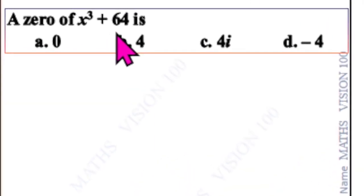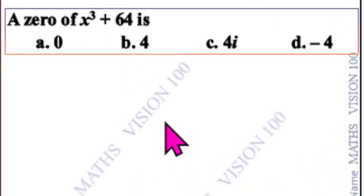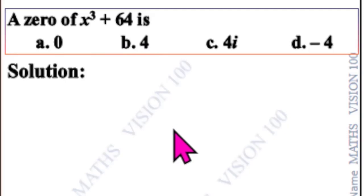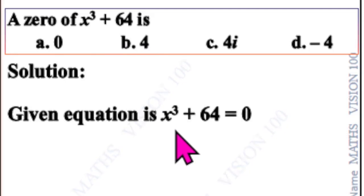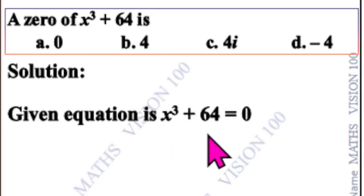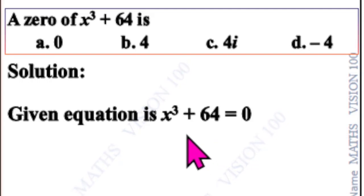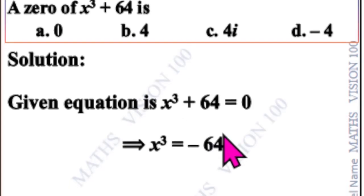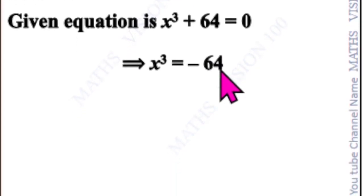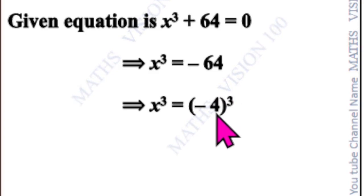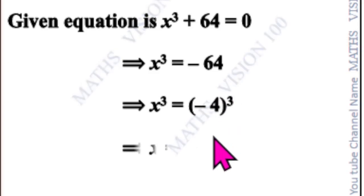The solution for x cube plus 64 equals 0. The given equation is x cube plus 64 equal to 0, which implies x cube is equal to minus 64. Since minus 64 is minus 4 cube, taking the cube root gives x equal to minus 4.